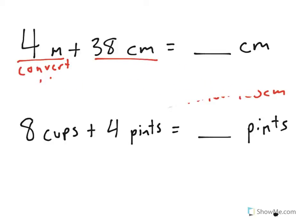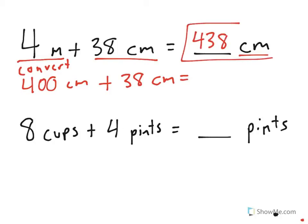Now, I'm going to erase this so I could write this under here. 400 centimeters, and now we see that they're both in the answer format that we're looking for. So, 400 centimeters plus 38 centimeters is equal to 438 centimeters for the correct answer.